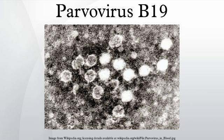Fifth disease, or erythema infectiosum, is only one of several expressions of Parvovirus B19. The associated bright red rash of the cheeks gives it the nickname slap cheek syndrome. Any age may be affected, although it is most common in children aged 6 to 10 years. It is so named because it was the fifth most common cause of a pink-red infection-associated rash described by physicians. Once infected, patients usually develop the illness after an incubation period of 4 to 14 days. The disease commences with high fever and malaise, when the virus is most abundant in the bloodstream, and patients are usually no longer infectious once the characteristic rash has appeared.